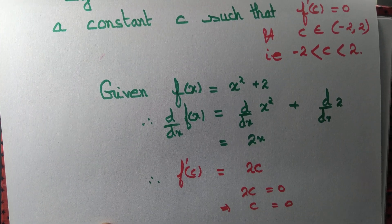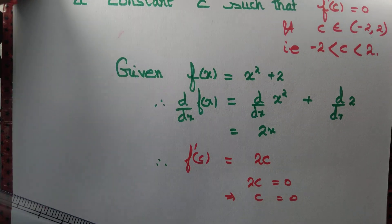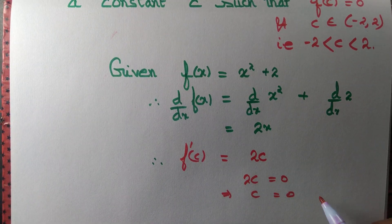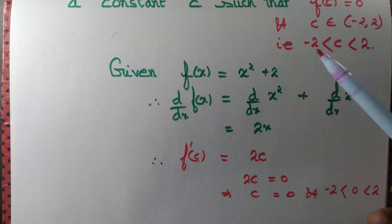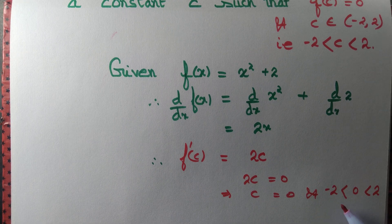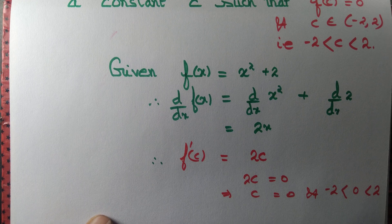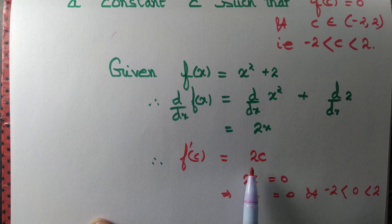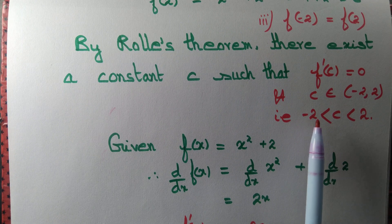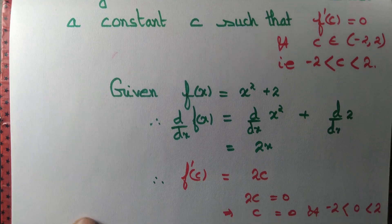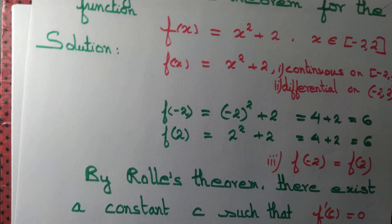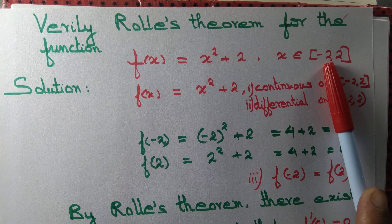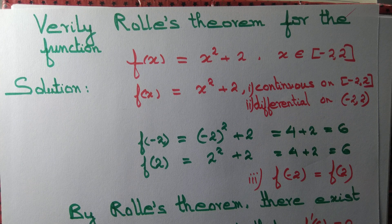When we take c = 0, we observe that f'(c) = 0, and clearly 0 is greater than -2 and less than 2. So we have found the constant c = 0 such that f'(c) = 0 and c lies between the endpoints -2 and 2. Thus, we have verified Rolle's theorem — of course, only for this function x² + 2 on the interval [-2, 2]. We have not proved Rolle's theorem.